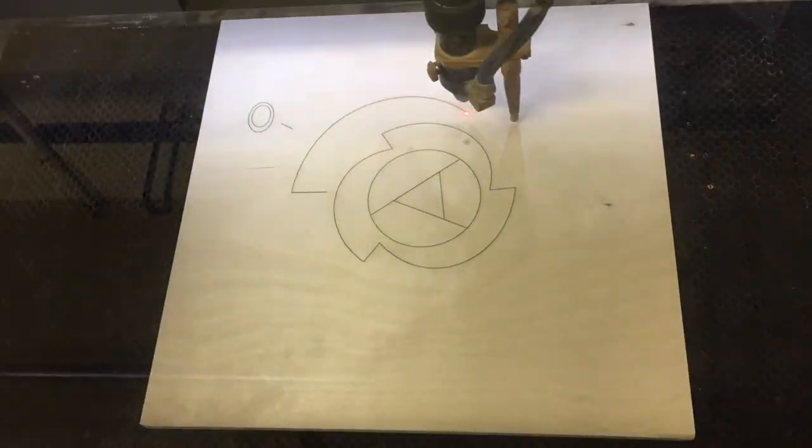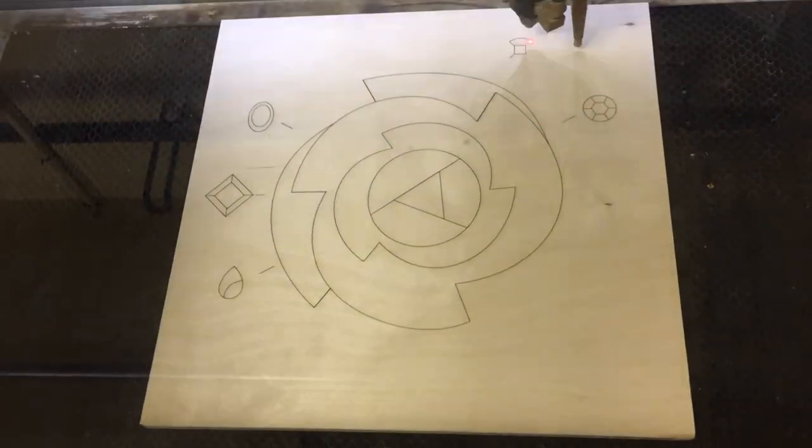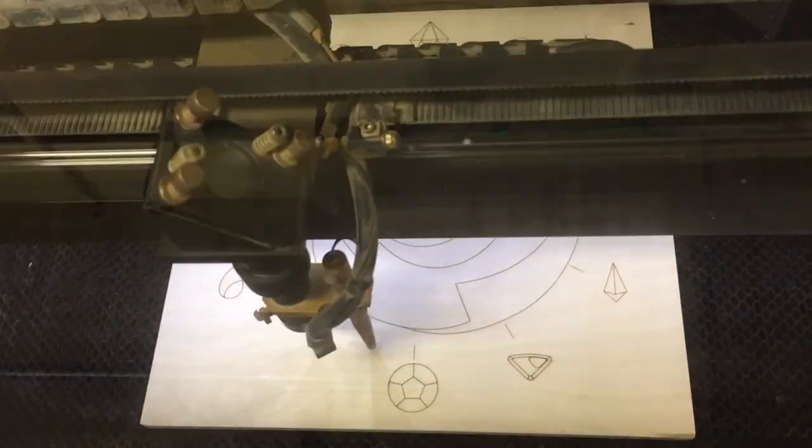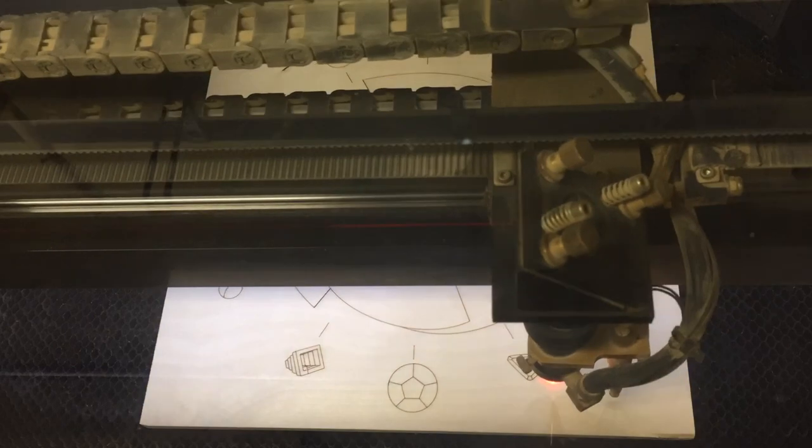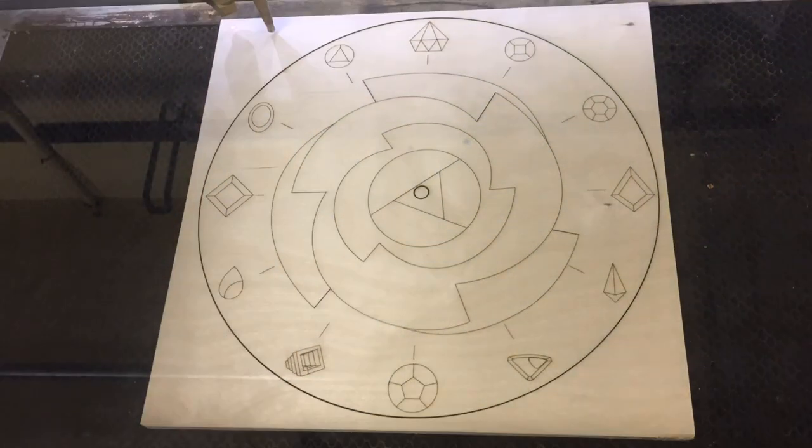First lines being etched here are at a super low power setting. Only 3% power so they're barely even drawn into the wood.